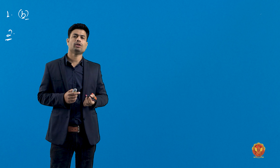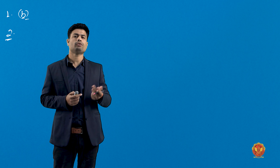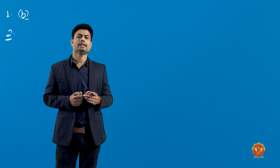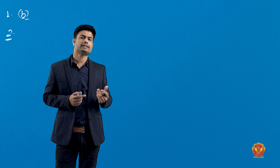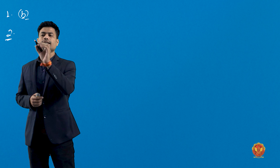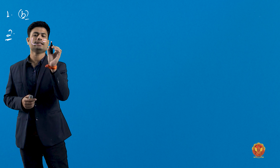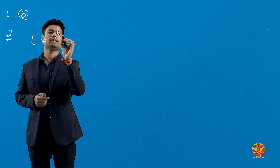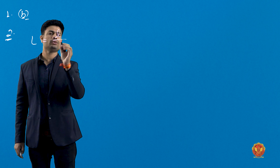Let us solve this. For this type of problem, we use a simple formula for standardization correction. The correct length formula is: capital L equals small l divided by L-dash, multiplied by capital L-dash, where small l is the correct length of the chain or tape.